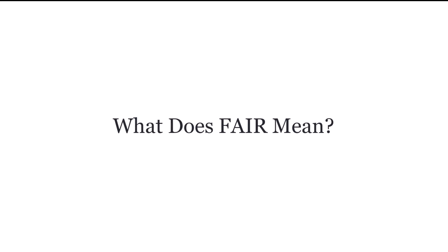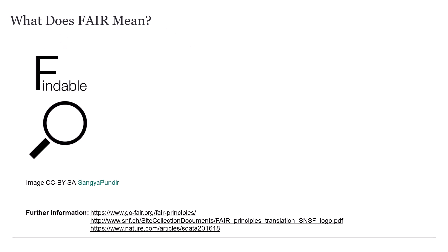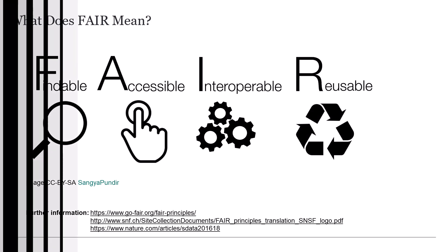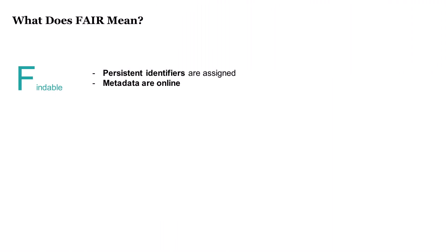FAIR is an acronym and stands for Findable, Accessible, Interoperable, and Reusable. Findable means that the data and metadata can be discovered by both humans and machines. To make data findable, enough detailed descriptive metadata should be provided as well as persistent identifiers — in other words, long-lasting references to digital resources. For example, a URL would be an identifier that is not persistent and could change over time.